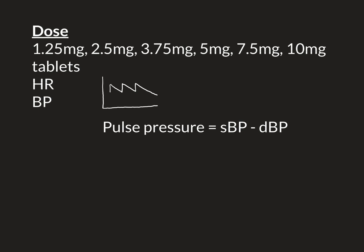If you imagine making the heart go slower, there will be a much longer gap between beats, and the blood pressure will have much more opportunity to fall — dropping to a lower diastolic pressure. So the difference between the systolic pressure and the diastolic pressure — the pulse pressure — is going to increase when the heart rate is going slower.